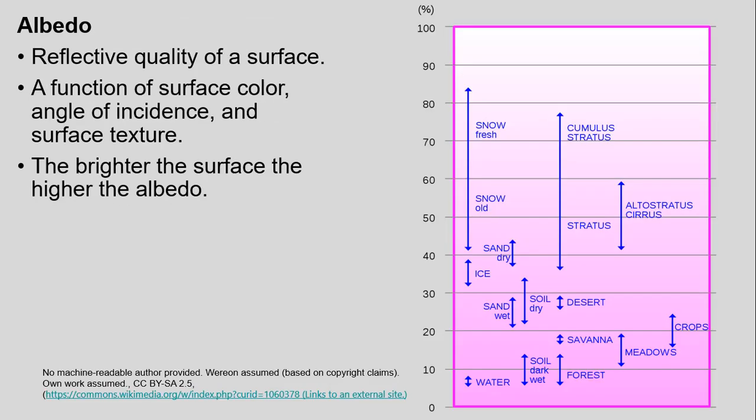Continuing on albedo — we have this idea of it going from 0 to 100%, and we can see that on this image on the right-hand side. It's referring to this reflective quality of a surface, and this is a function of things like surface color, the angle of incidence — that sun angle we talked about in past lectures — as well as surface texture. The general idea is that the brighter the surface, the higher the albedo. We can see that much higher percentages of albedo are found on things like fresh snow, and clouds in the atmosphere can also be highly reflective.